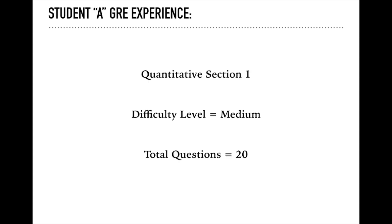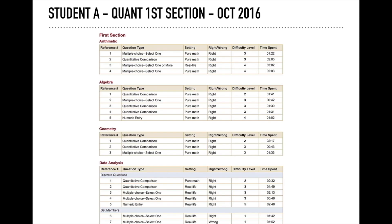Let's talk about Student A's experience — the 2016 student. In quantitative section 1, difficulty level medium by default, there are 20 questions. In the original GRE report, section 1 is divided into four chapters: Arithmetic, Algebra, Geometry, and Data Analysis, further divided by question types, settings, right/wrong, difficulty level, and time spent. Student A got 19 out of 20 correct — the only incorrect question was a Data Analysis question at difficulty level 1.